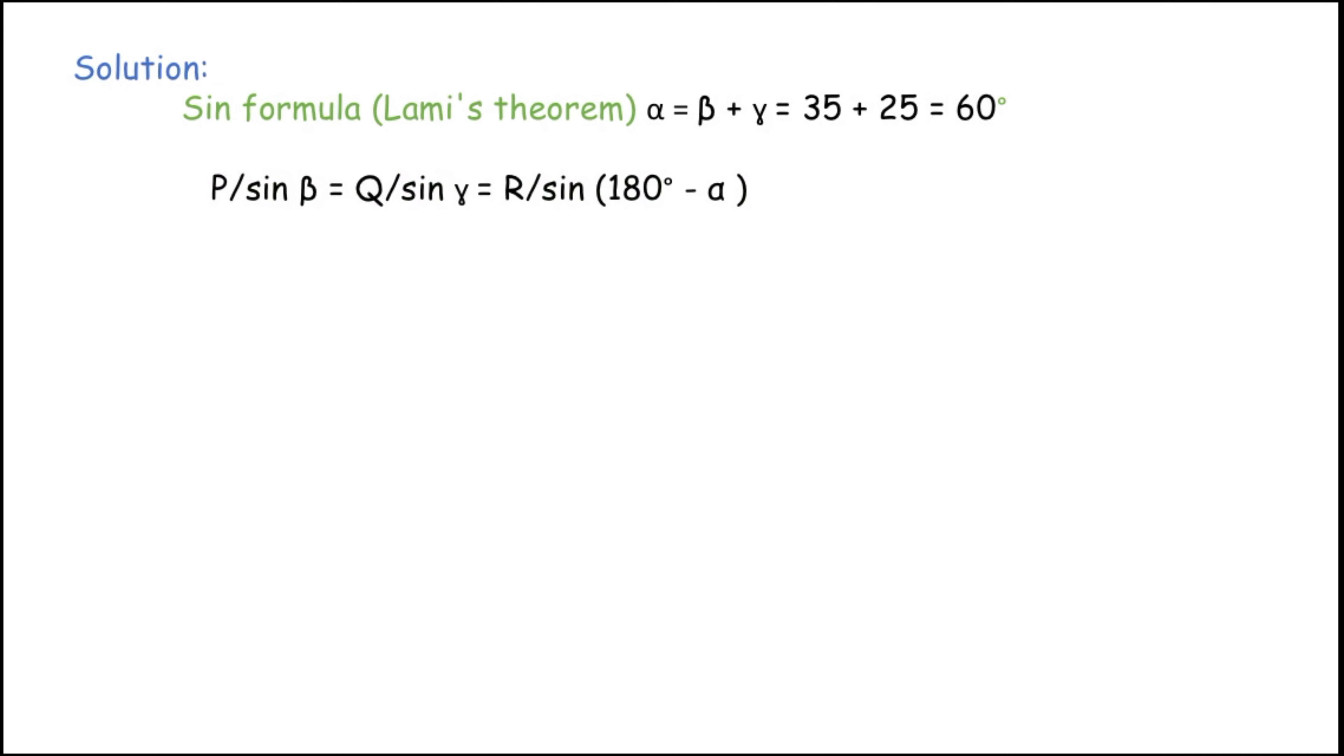So P/sin β = R/sin(180° - α). Now transfer sine beta from left to right, it becomes multiplication. So P = sin β × R / sin(180° - α).